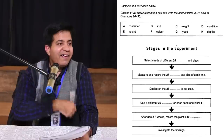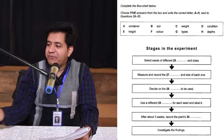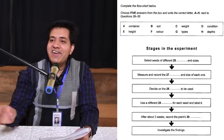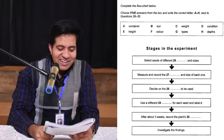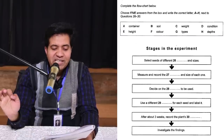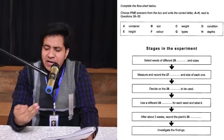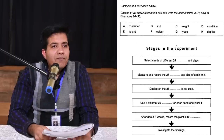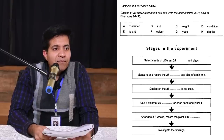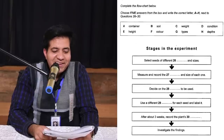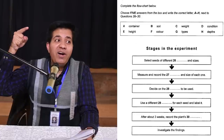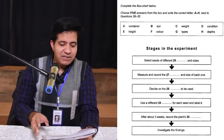Question 29: 'Use a different [blank] for each seed and label it.' You'd guess container — a different pot or container for each seed. Audio: 'Do you think we can plant several seeds together in the same plant pot?' — 'No, I think we need a different one for each seed.' 'Plant pot' is the synonym for container, so the answer is A (container).